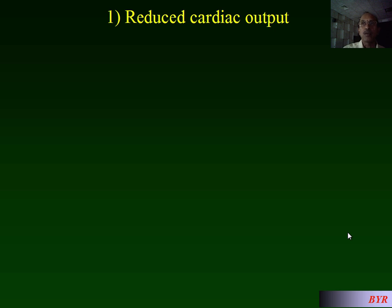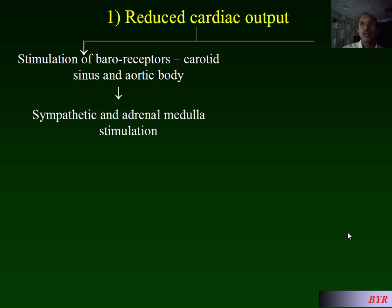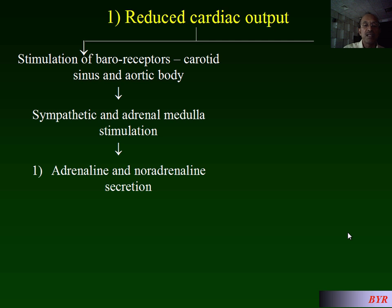Reduced cardiac output causes stimulation of baroreceptors in the carotid sinus and aortic body. These baroreceptors are sensory receptors for pressure changes in the blood. Whenever there is a fall in blood pressure, these receptors are stimulated. When stimulated, they activate the vasomotor centers, leading to sympathetic and adrenal medulla stimulation, which causes increased secretion of adrenaline and noradrenaline.